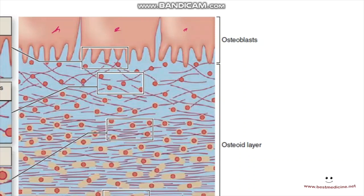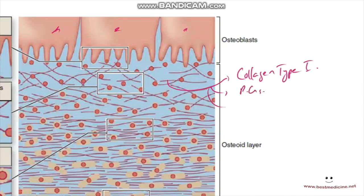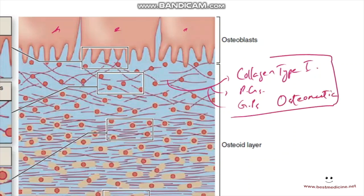Those components are then calcified or ossified and become hard. The matrix components include collagen type I, proteoglycans, and glycoproteins such as osteonectin. These are the initial components of the bone matrix that are secreted to form a soft bone before it has been calcified or ossified.